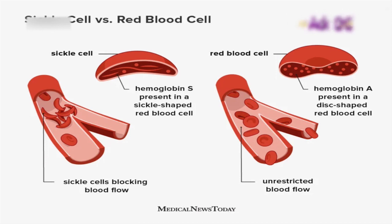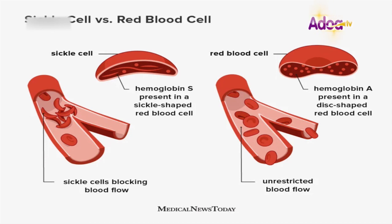For sickle cell disease to occur, both parents must carry or have the sickle cell gene. The normal hemoglobin is referred to as A and the sickle cell type as S. A child inherits half of the gene from the mother and half from the father. If both parents are carriers and the child inherits the S from both, the child ends up with SS — that is when the child has sickle cell disease.